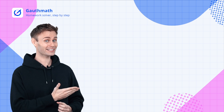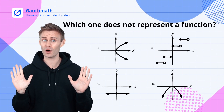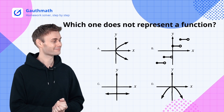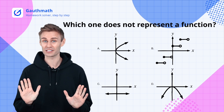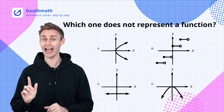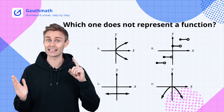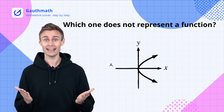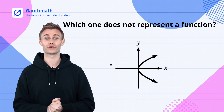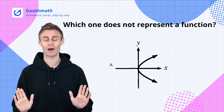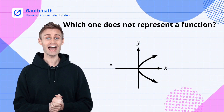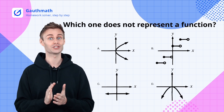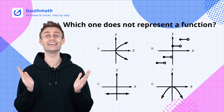Let's take a look at this question. Among all the options, which one does not represent a function? Now we know that to be defined as a function, the condition is that for any given x, it has to have and only have one y value. Take a look at option A — for any x value, there are two y values correspondingly, so A does not represent a function. The x value in options B, C, and D only has one y value accordingly, so the correct answer is A.